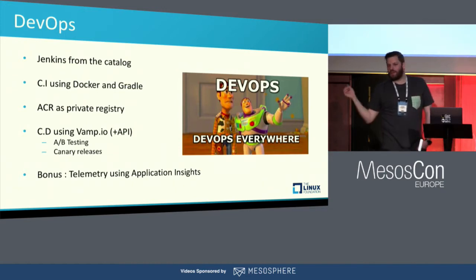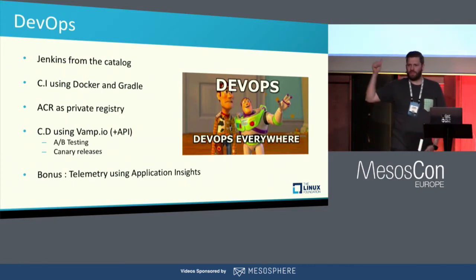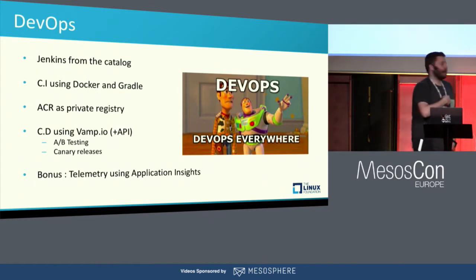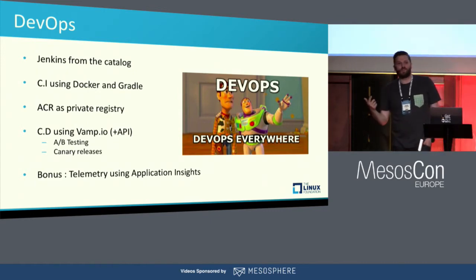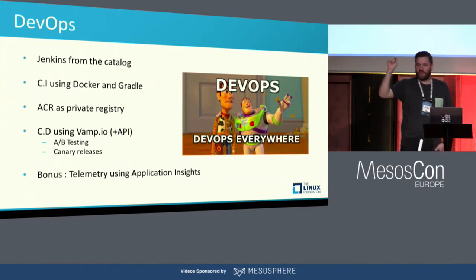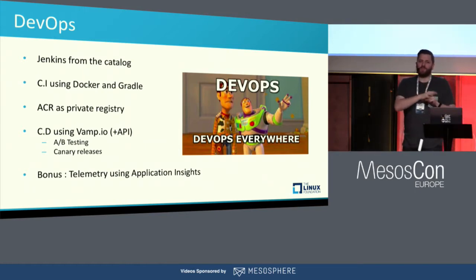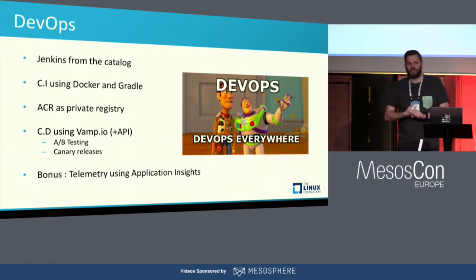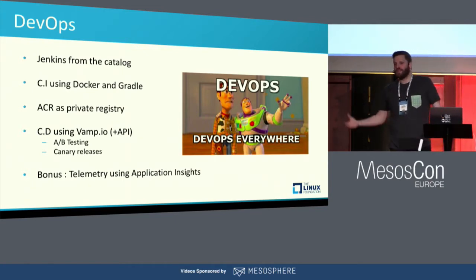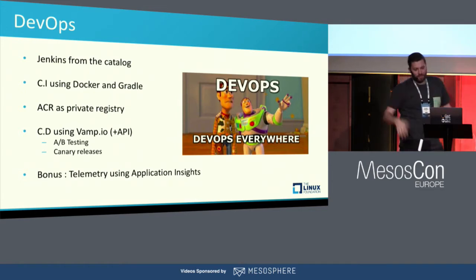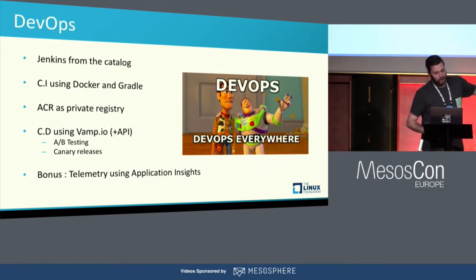Then we're going to do CD — try to deploy continuously on a cluster using VAMP. Did you hear about VAMP? It's pretty awesome, actually. I discovered it from the universe catalog — I just click deploy and see what's going on. It's really awesome especially when you start with DCOS and Mesos in terms of networking, especially for the CD piece when you want to do canary testing, A/B testing, and so on. Since we only have 45 minutes, that tool is going to help me a lot. If we have time: telemetry, application insights, and so on.